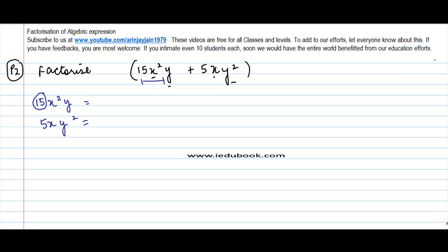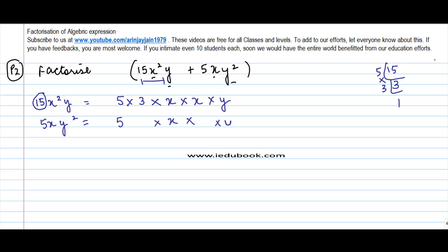Now if you see, what are the factors of 15? 15 can be written as 5 into 3, so I write this as 5 into 3 into x², and if you factorize x² you can write it as x into x, and then into y. Now if I look at 5xy², I can write this as 5 into x into y into y.